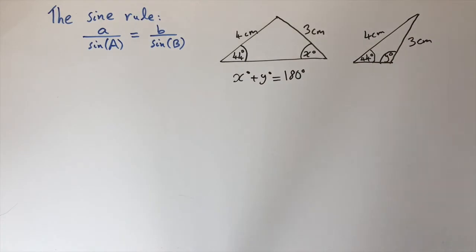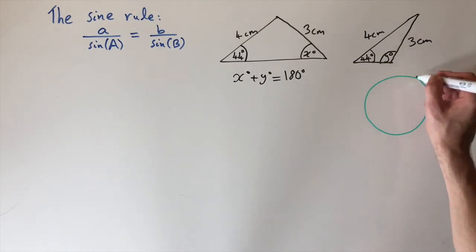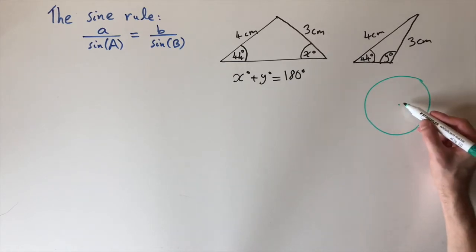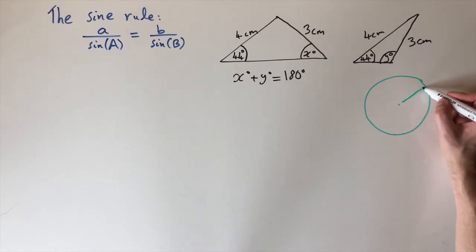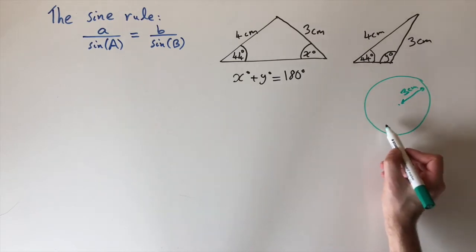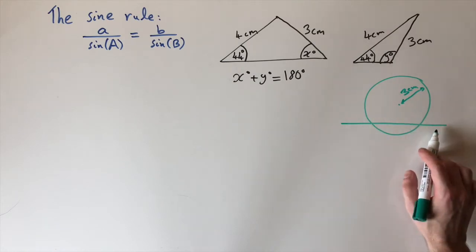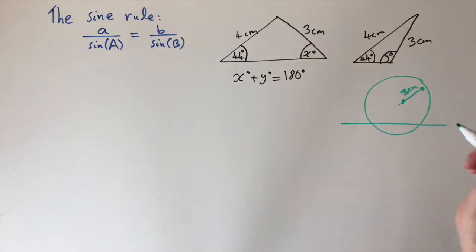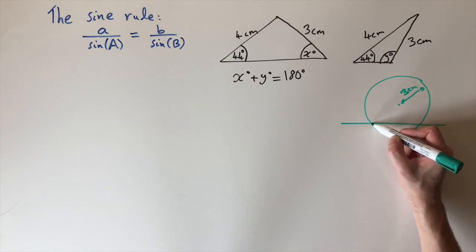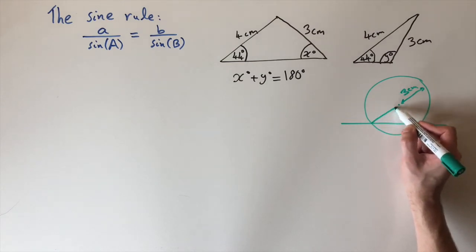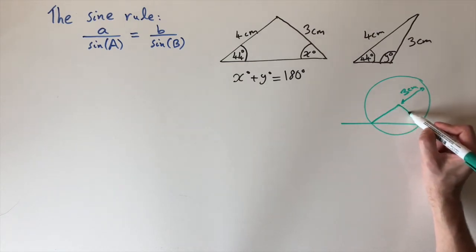Now one way to see this is if we draw a circle. Let's say this circle has radius 3 centimeters. If I draw the radius here, this is 3 centimeters. Now let's imagine intersecting the circle with a horizontal line. This line represents the baseline of this triangle. Now imagine drawing these lines that intersect the circle and line up to the radius. I'm going to draw a line like this and also one like this.